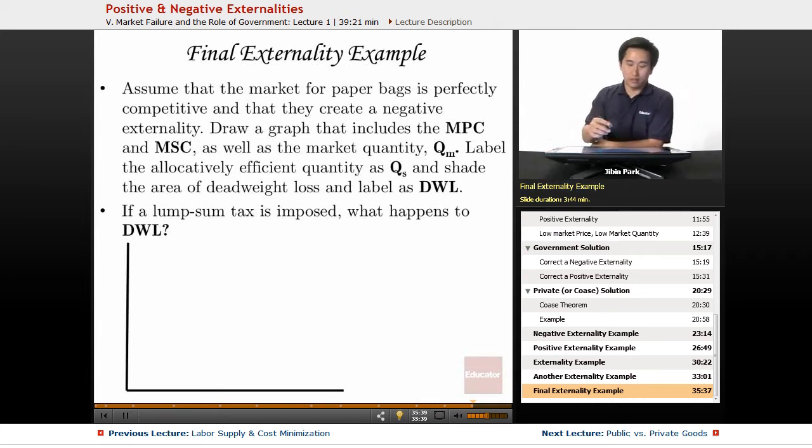Here's the final externality example. Let's assume that the market for paper bags is perfectly competitive and that they create a negative externality. Draw a graph that includes the MPC and MSC.